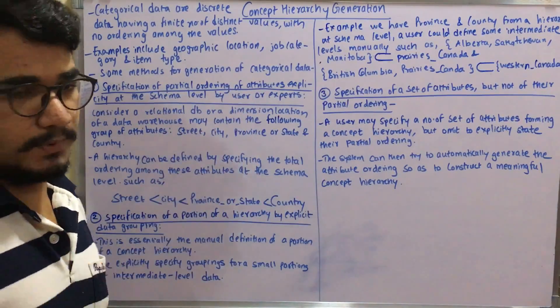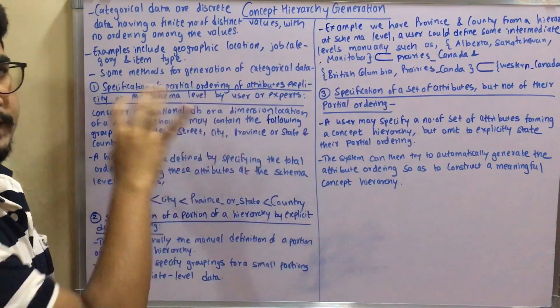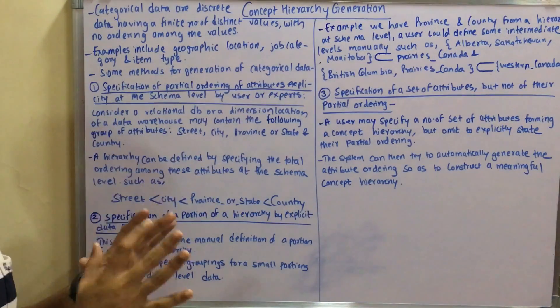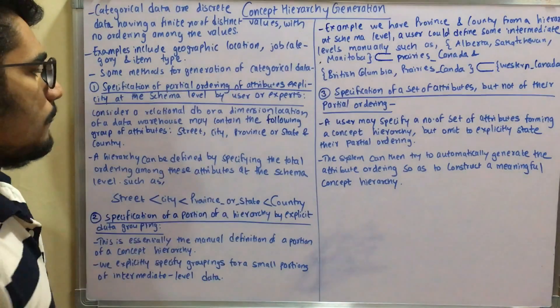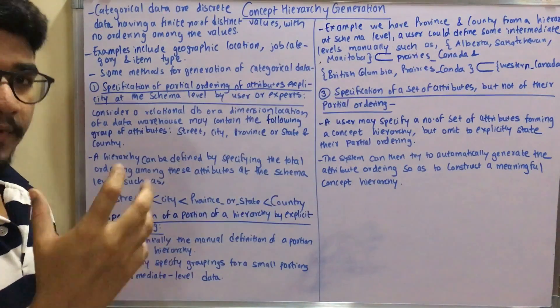The very first is specification of partial ordering of attributes explicitly at the schema level, either by users or experts.